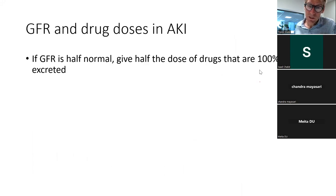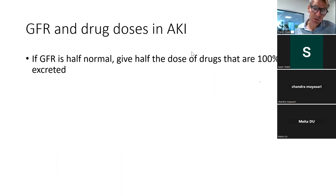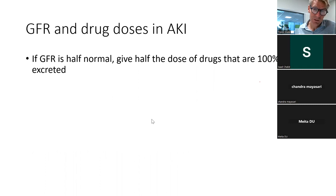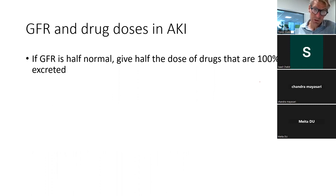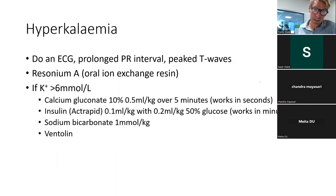If the GFR is half normal — that is, the creatinine has doubled — then at minimum halve the dose of drugs that are 100% renally excreted, or stop them if not needed. Nephrotoxic drugs such as aminoglycosides, amphotericin, and NSAIDs should be stopped; do not give them to children with AKI.